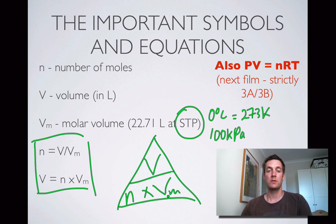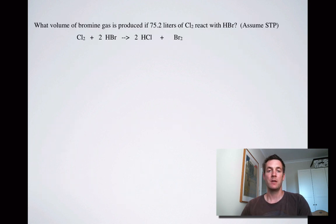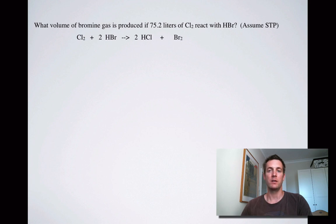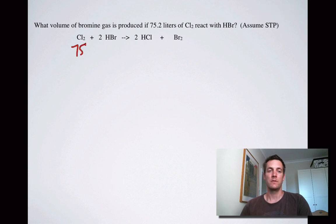Here's a question dealing with stoichiometry: what volume of bromine gas is produced if 75.2 litres of chlorine react with HBr? Assume STP. We know that the molar volume of any gas at STP is 22.71 litres. We're told we have 75.2 litres of chlorine and we need to find the volume of bromine. Looking at the mole ratio, it's one to one.